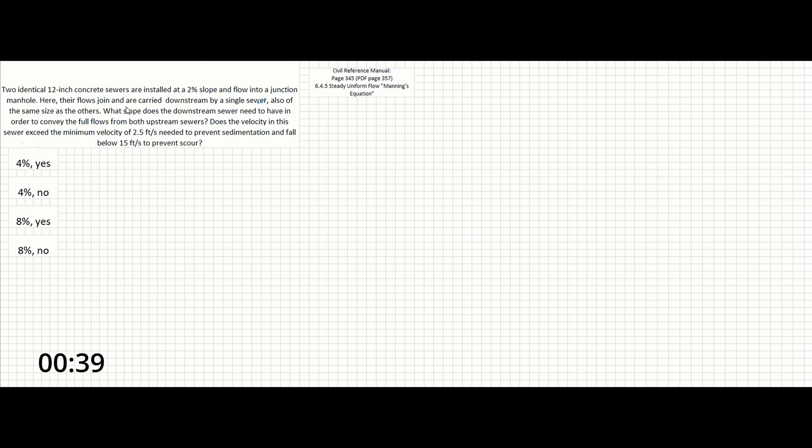So the first thing we need to recognize to solve this problem is that we're using Manning's equation. Our reference manual will give us the equation, and we can see in it that Q for flow equals 1.49 over Manning's n times area times hydraulic radius raised to the two-thirds times slope raised to the one-half. So that is Manning's. If we compare the flow in both of the twin 12-inch concrete sewers at slope of 2% with another form of Manning's for the other sewer whose slope we don't know yet, we can back calculate to solve for the slope.